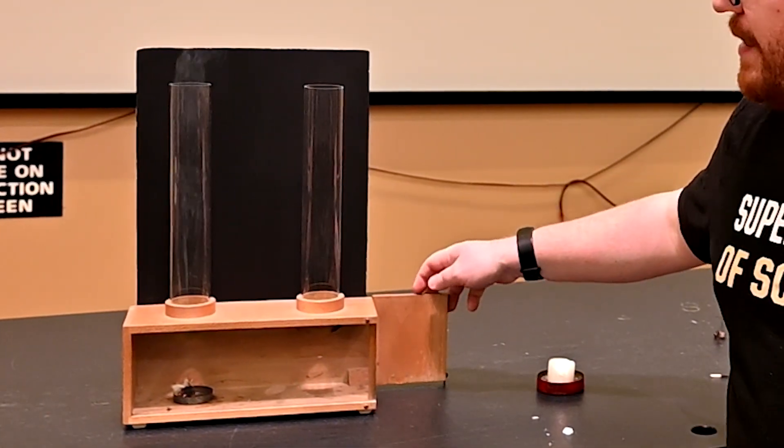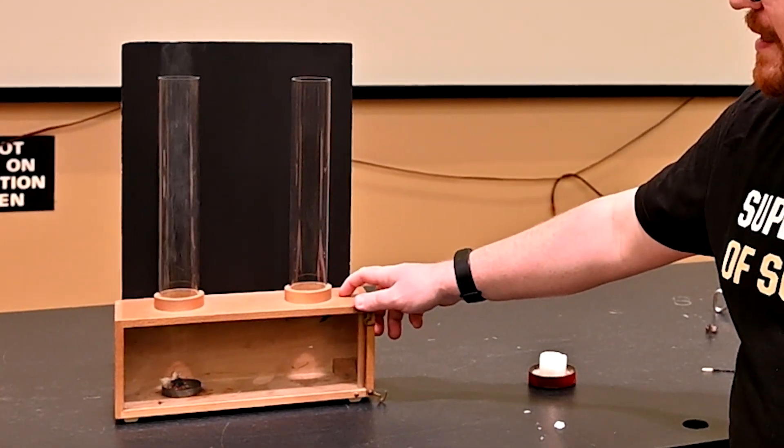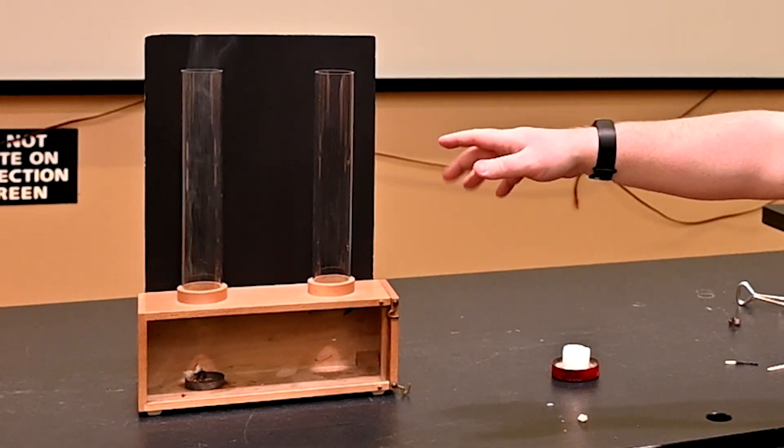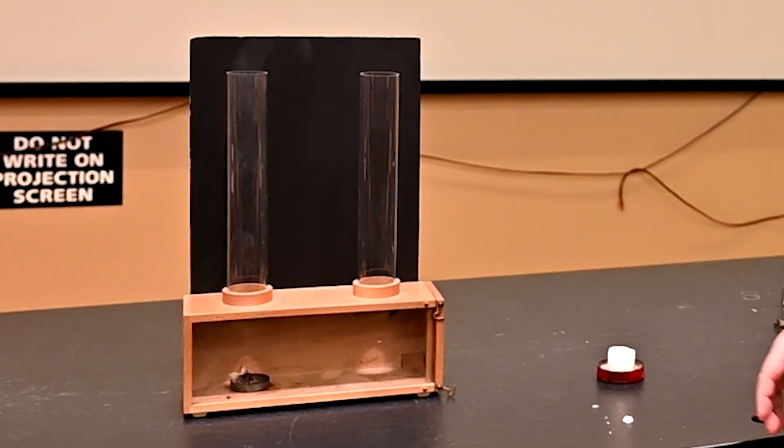So right now, that smoke is rising because it's less dense than the air around it. So we see it coming out of the chimney that it's right above.